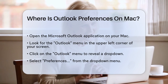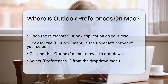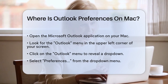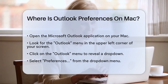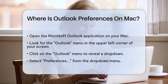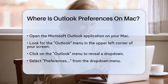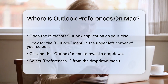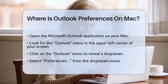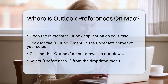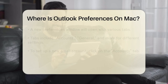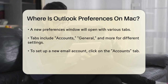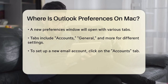Once it's open, look at the top menu bar and click on the Outlook menu. This is usually located in the upper left corner of your screen. After clicking on Outlook, a drop-down menu will appear. From this menu, select Preferences.